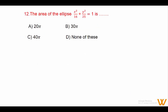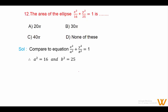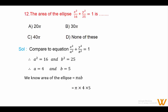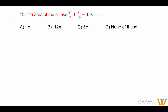Question 12: Area of the ellipse x²/16 + y²/25 = 1. Comparing with standard form, we get a² = 16 and b² = 25, so a = 4 and b = 5. Area = πab = π × 4 × 5 = 20π. Answer is option A: 20π square units.